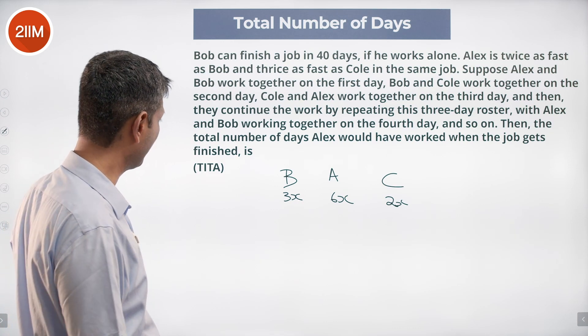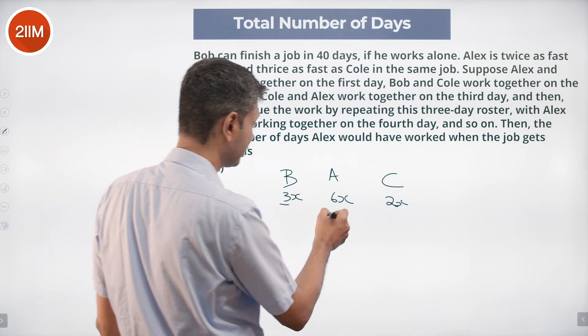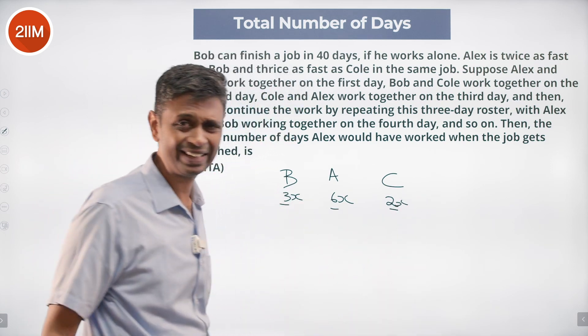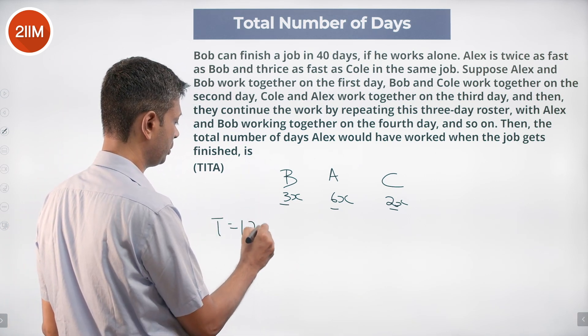The number of days Alex would have worked when the job gets finished. Nice question. So Bob can do 3x in a day, Alex can do 6x in a day, Cole can do 2x in a day. Integers really help. Total task is 3x into 40, which is 120x.